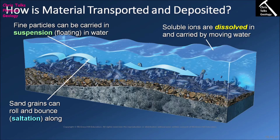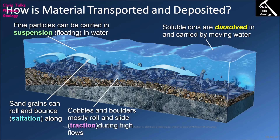Saltation typically applies to sand-sized clasts. Normally anything larger than sand is too heavy to be picked up by river water unless the river is moving with a lot of energy. The main way that anything larger than sand is transported is through traction — the process through which the force of water rolls or slides clasts along the bottom of the channel. The more energy a river has, the larger the clast it can move through traction, so a fast-flowing mountain river can in theory move boulders.